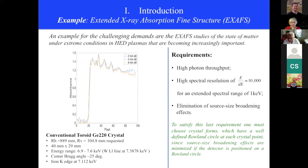And lastly, you have to eliminate any source size broadening effects. This last requirement means that you have to choose crystal forms where each crystal point is associated with a well-defined Rowland circle, since source size broadening effects can be minimized by moving the detector onto a Rowland circle.